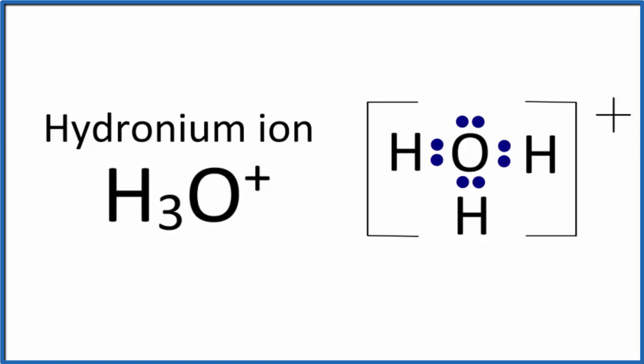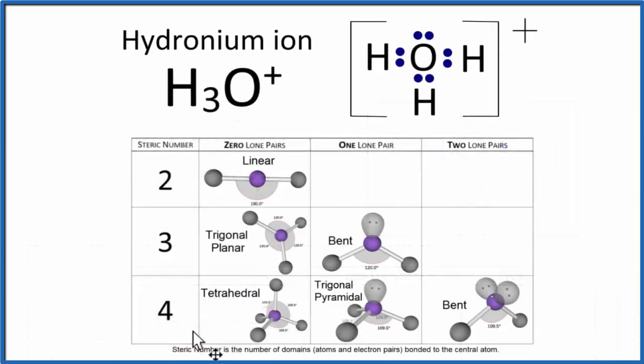We can take a look at this table here and see that we have four groups as our steric number and one lone pair. That's trigonal pyramidal, and we have a bond angle of about 109.5 degrees. This is a good table to memorize when you're doing molecular geometry.